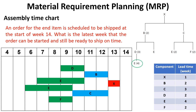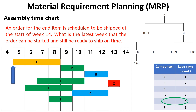The last level reveals that item E is required for item D's production. We know that item E's lead time is four weeks, so going backward from the beginning of week 9 by four weeks means that the order of item E must be released at the beginning of week 5. Now we finish the assembly time chart, from which we can conclude that the latest week that the order can be started and still be ready to ship on week 14 is week 5.